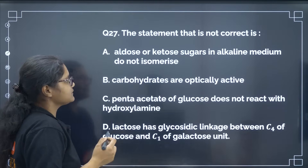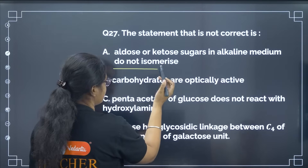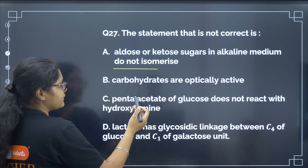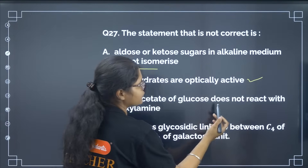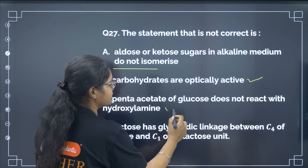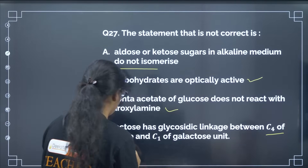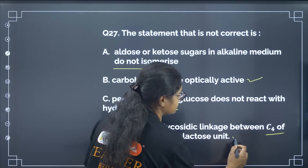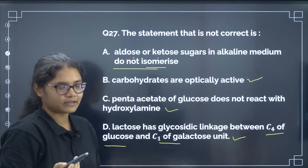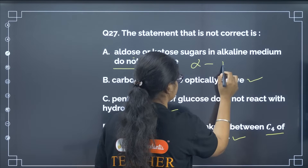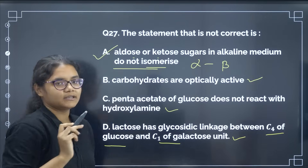Find the statement that is not correct: aldose and ketose sugars in alkaline medium do not isomerize; carbohydrates are optically active; pentacetate of glucose does not react with hydroxylamine; lactose has a glycosidic linkage between C4 of glucose and C1 of galactose. Aldose and ketose sugars do undergo isomerization from alpha to beta form, so that statement is incorrect. The correct answer is option number A.